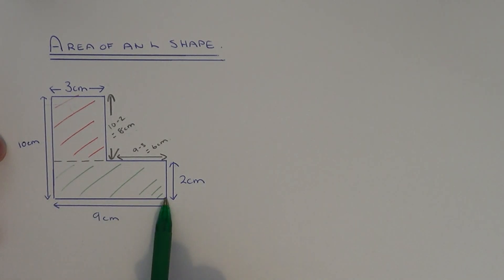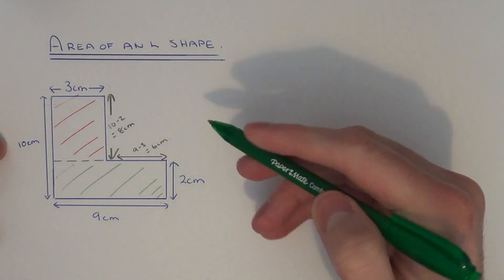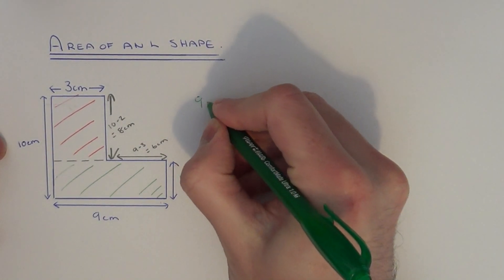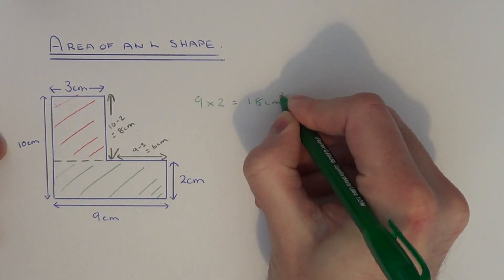The base of the green rectangle is nine and the height of the green rectangle is two. So the area here will be nine times two which is eighteen centimeters squared.